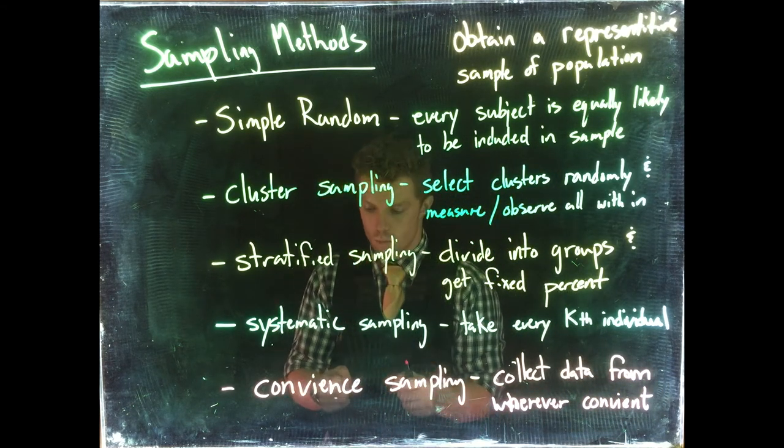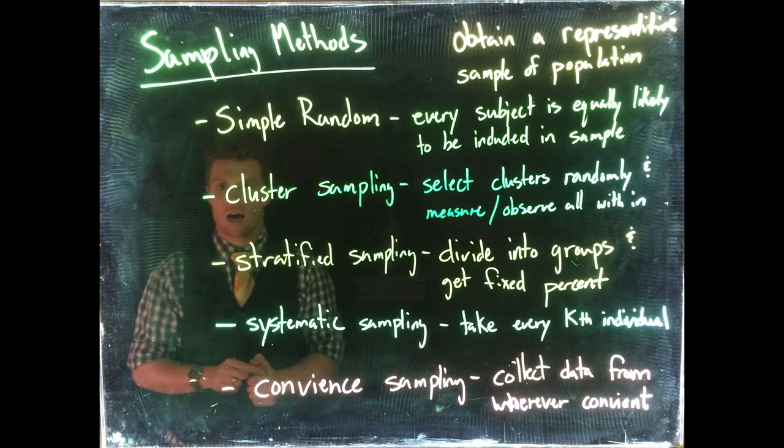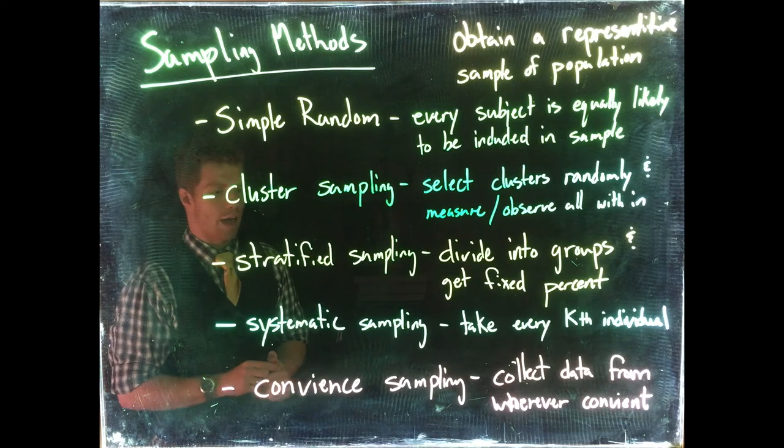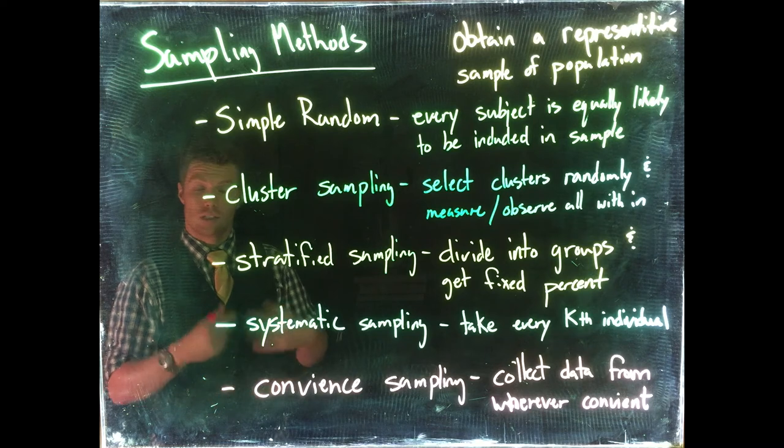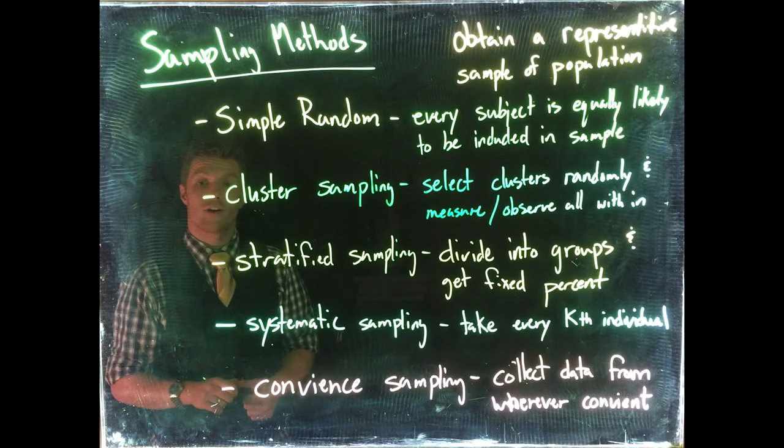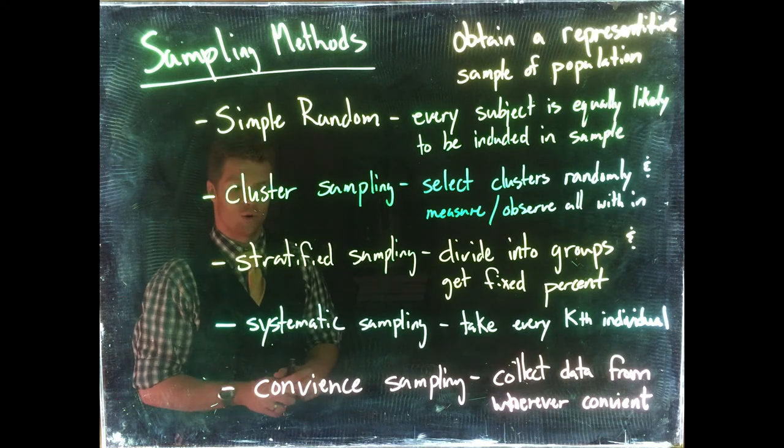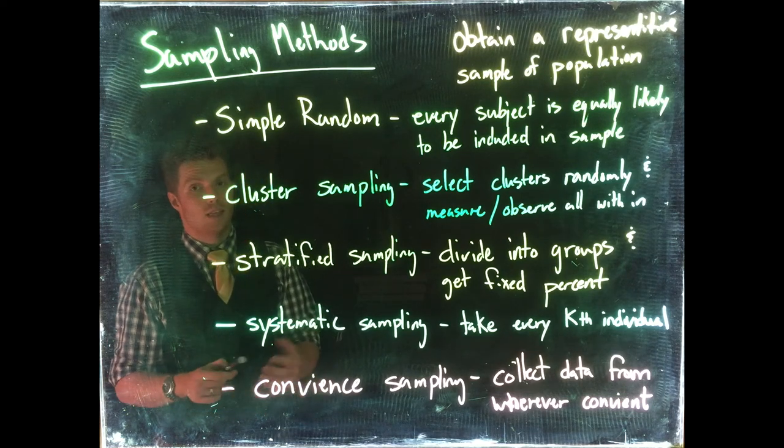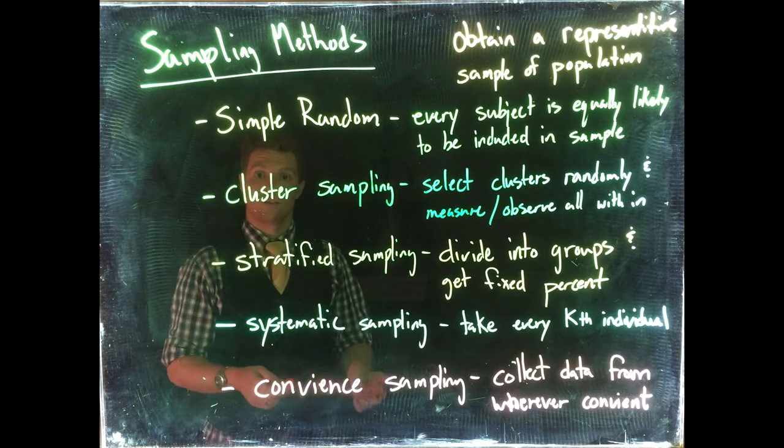This is typically a poor way to do sampling because it is very often not representative of our population. So a convenience sampling example could be: let's say we're still dealing with Casper College and I go out and stand in front of the library and take the first ten people to walk into the library in the morning. The problem with that is those people may not be very representative of all Casper College students.